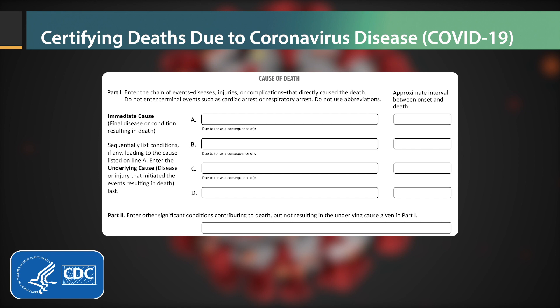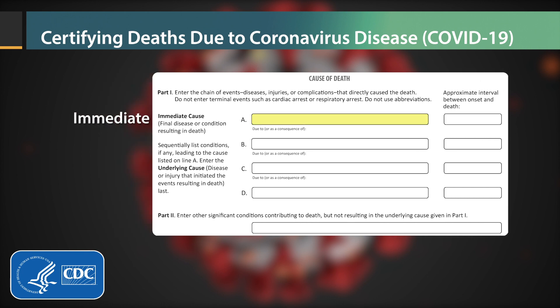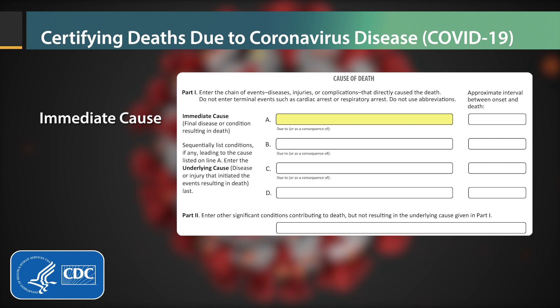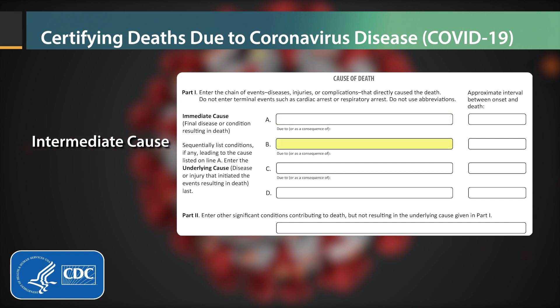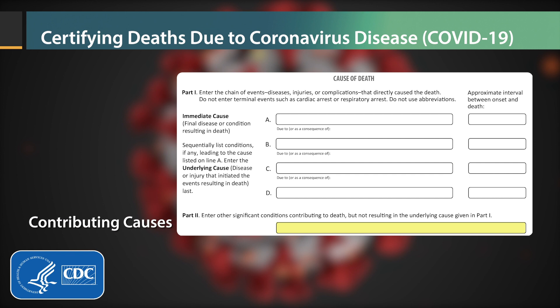Proper cause of death certification requires that you use your best clinical judgment to determine the causes of death to report in the cause of death section of the death certificate. Report the immediate cause on Line A. This condition should be followed by any relevant intermediate causes in a logical sequence in terms of time and etiology below. A specific underlying cause should go on the lowest line used in Part 1. Leave any unused lines blank. Any other conditions that may have contributed but were not part of the sequence in Part 1 should be reported in Part 2.